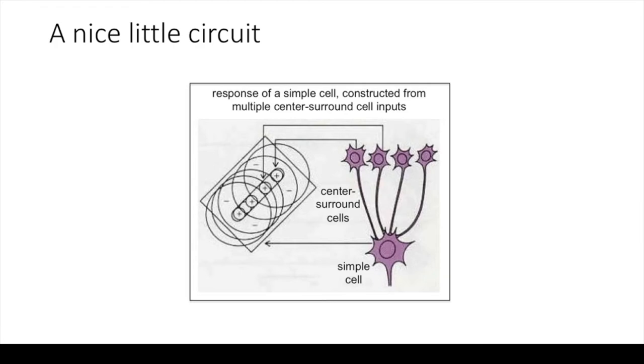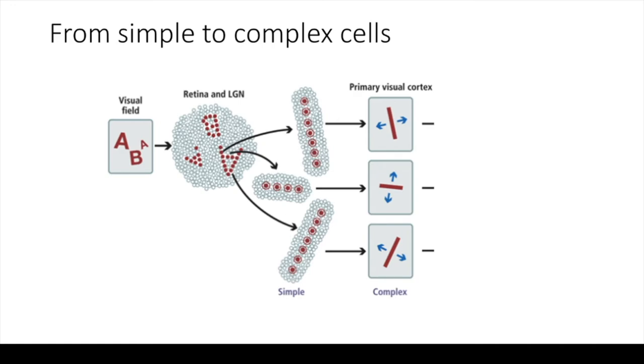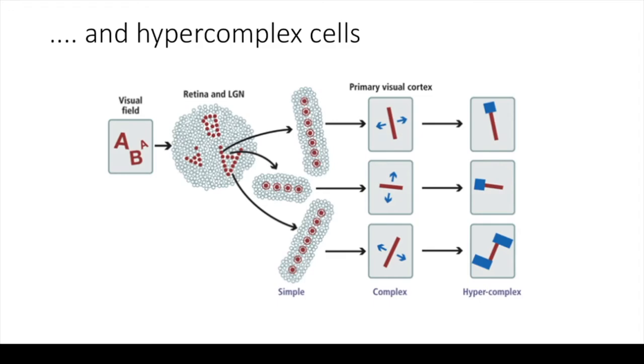Simple cells then pass their activation to another kind of cell discovered by Hubel and Wiesel, which they called complex cells. These cells sum and integrate the input from simple cells, and are sensitive to orientation and motion. These, in their turn, pass their activations to hyper-complex cells, which process more complex features.